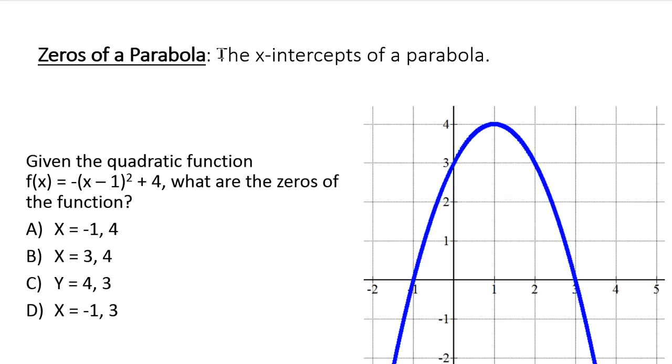The zeros of a parabola are the same thing as the x-intercepts. The x-intercepts of a parabola are where the parabola, or the u-shape—the u-shape right there, or upside-down u-shape—is called a parabola.